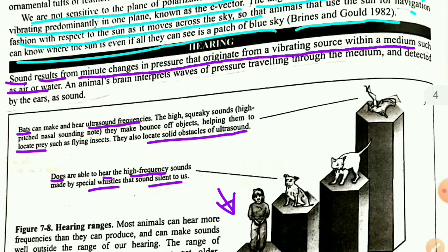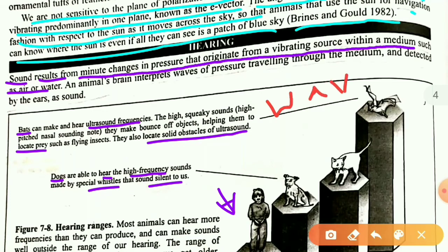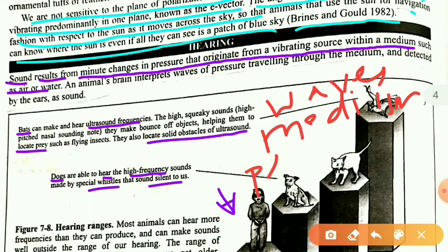One important thing to know is that sound travels in waves. It travels medium to medium. If there is air and water, it travels easily. If there is pressure or a disturbance, it travels from one point to the other.